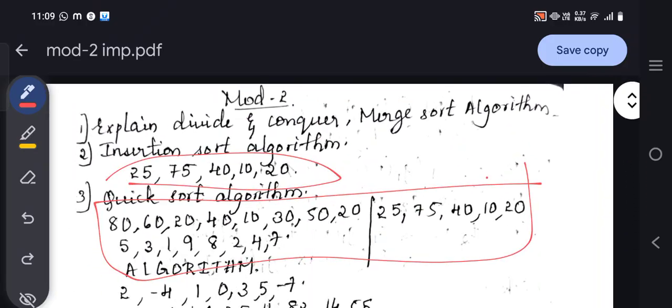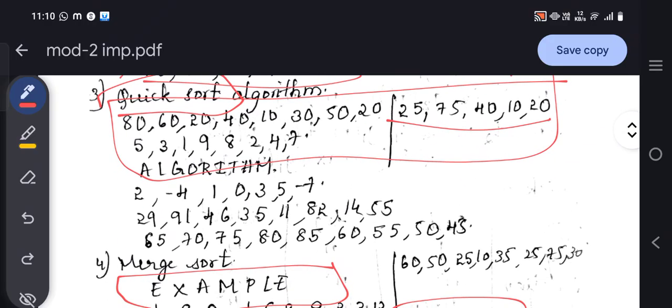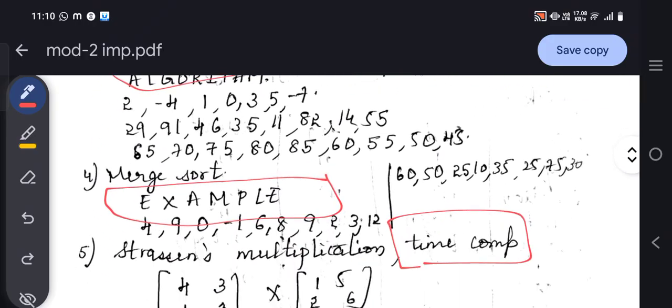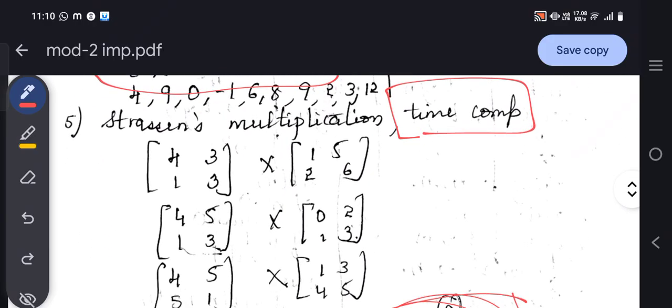What is the thing that you should not be missing from the entire module is divide and conquer, especially the merge sort. Then comes the insertion sort. I could find this in all of the questions. For quicksort, more than asking about the algorithm, they have asked multiple questions. Strassen's multiplication is also fixed. One and two questions are for Module 1, so three and four are for Module 2. The fourth question will always be Strassen's multiplication.